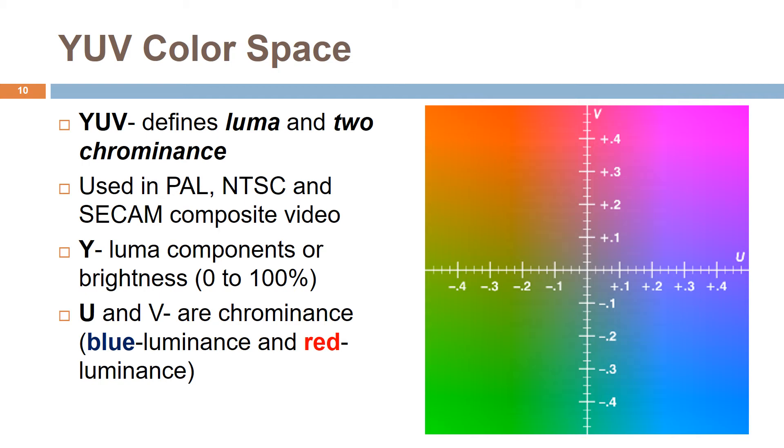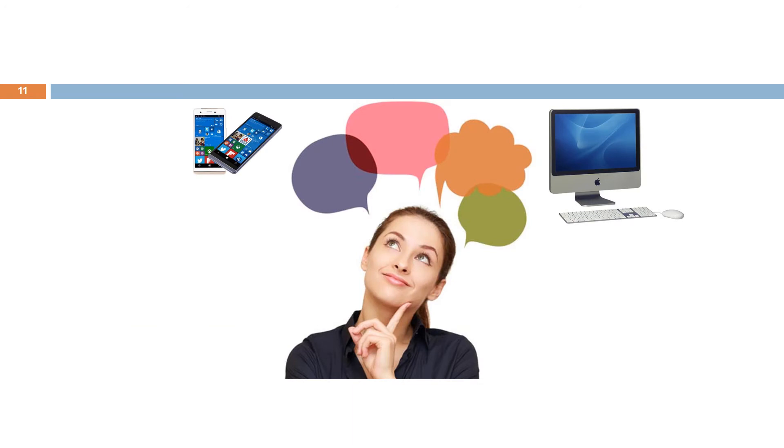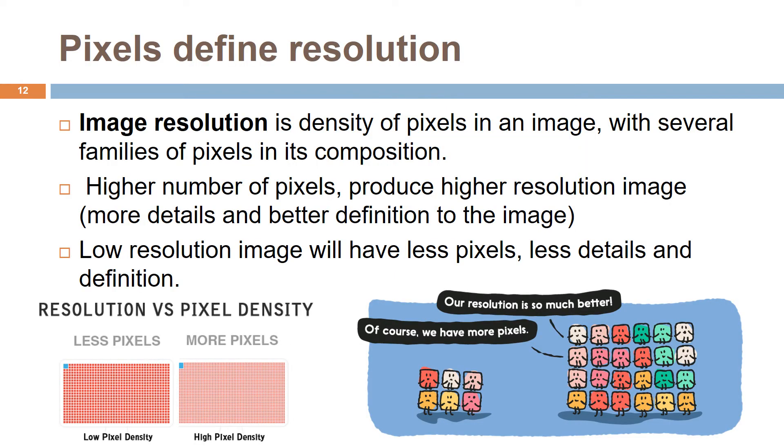Colors should be used according to the target audience's monitor specifications. Normally, customers will select their preferred monitor resolution when buying new stuff like smartphones or computers with higher resolution that suits their budget. What is image resolution? A high resolution image is an image with high density of pixels, with several families of pixels in its composition. The greater the number of pixels, the higher the resolution.